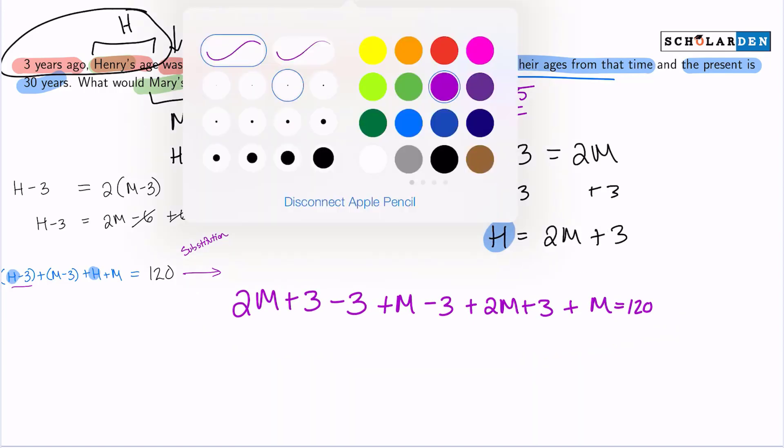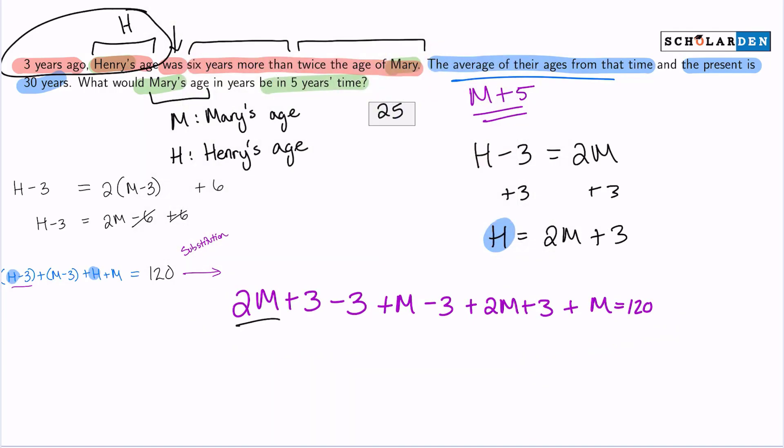Let's combine our like terms. We have two M, M, and two M, and M. So that's two, four, five, and six. So six M. Next, we have three and negative three cancels out. Three and negative three cancels out. Nothing else remaining. So we just have six M equals 120. So then if we divide both sides by six, we receive M equals 20.